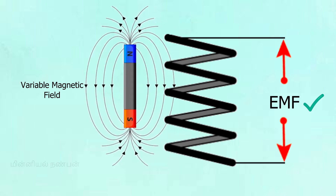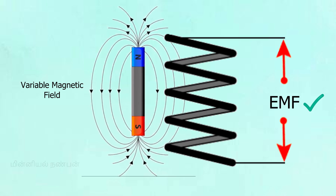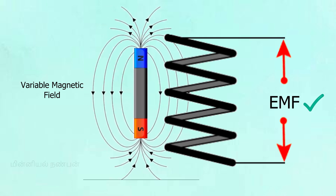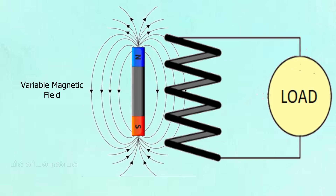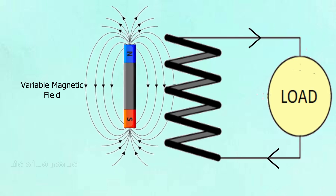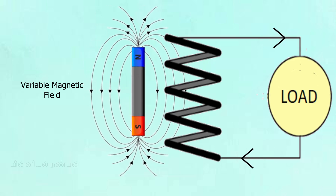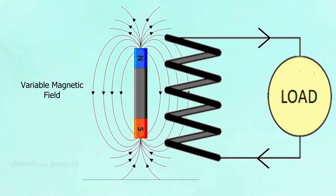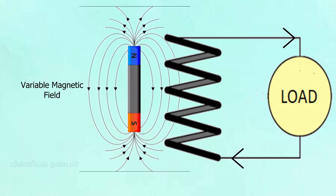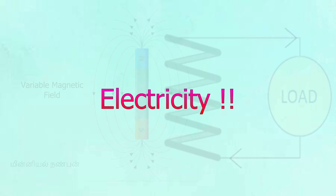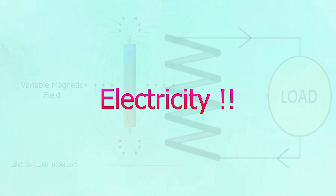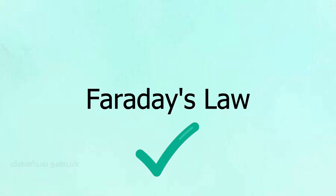Now, EMF is what drives current flow. This process is able to generate electricity. I will now explain the working principle behind Faraday's law — how the magnetic field in a coil changes to induce EMF.